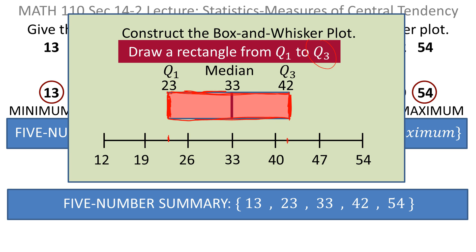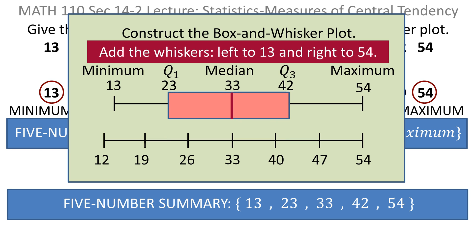This is the first quartile value. This is the third quartile value, and you also want to illustrate the median. So you want to put that in there, and if you'll remember, the median was 33. And now all you do is add the whiskers. The whiskers go to the left until it hits the minimum, and to the right until it hits the maximum.